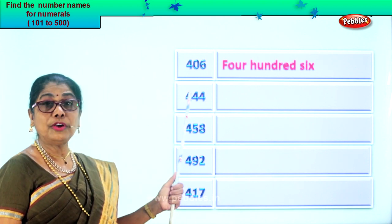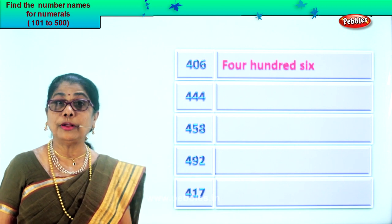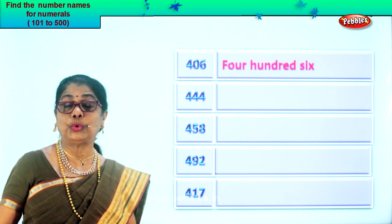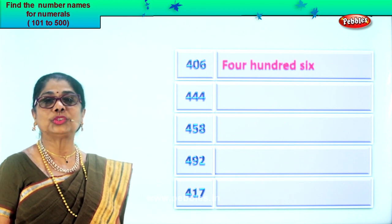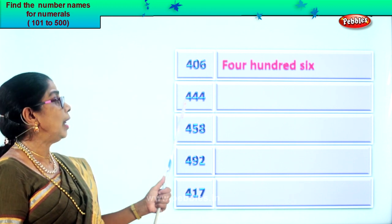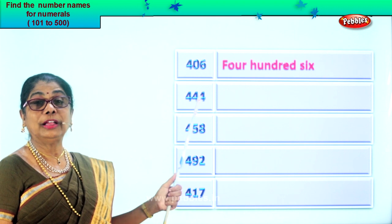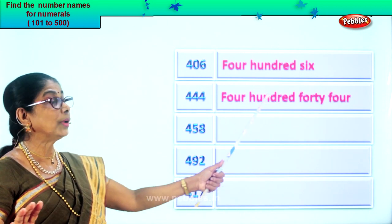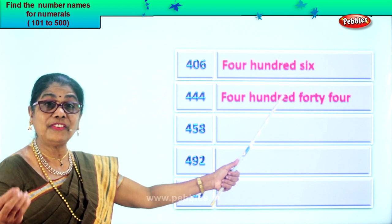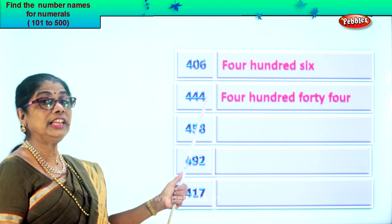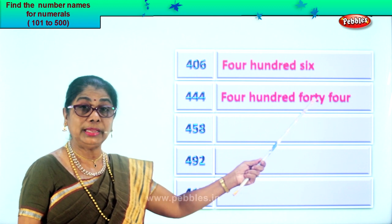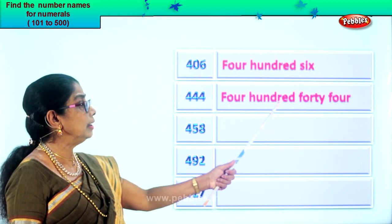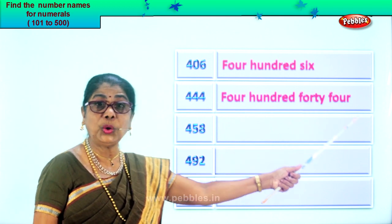Next numeral: you have four, four, and four — four in the ones place, four in the tens, and four in the hundreds place. So we read it as four hundred forty-four. First you write the spelling of four, then the spelling of hundred — four hundred. Next, forty-four. So you write forty and four. Four hundred forty-four.